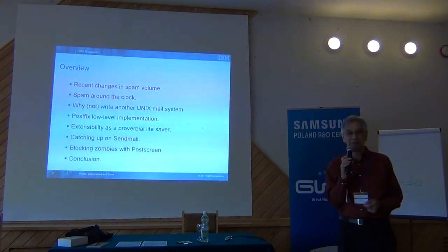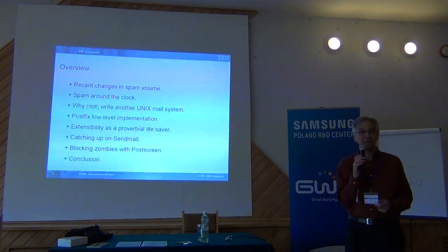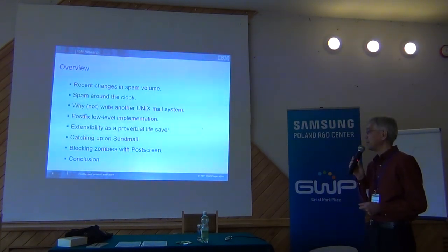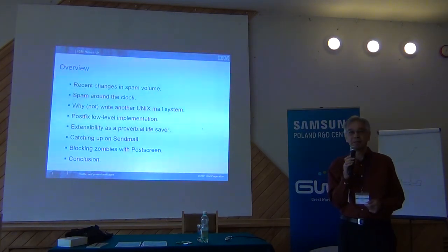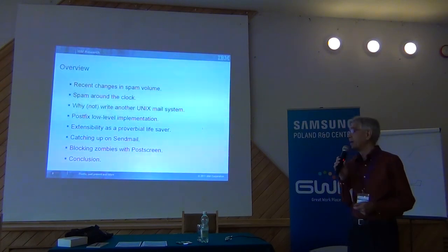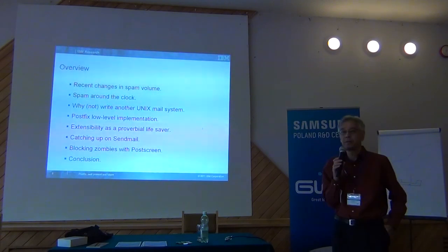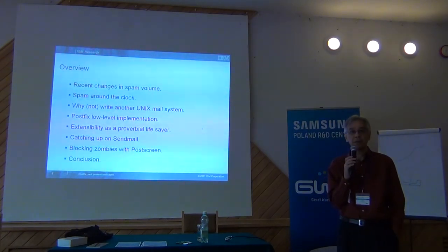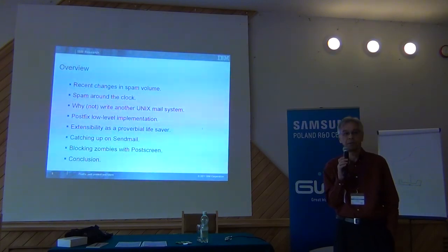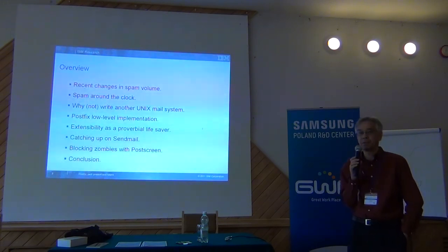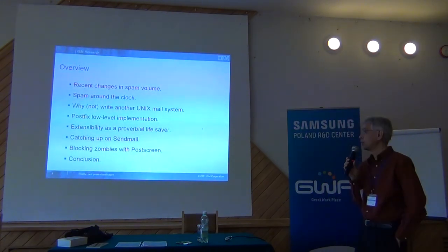Why would you write another Unix mail system in the first place, since there are already so many of them? A little bit about the ideas behind Postfix's low-level implementation. And then going into the mature life cycle of Postfix — how do you maintain a mail system so it works with a lot of other things, and stays up to date without having to replace the whole system every time a feature needs to be added?